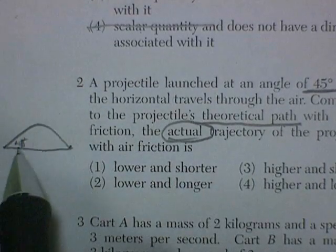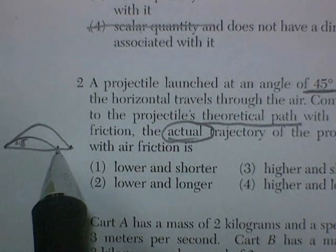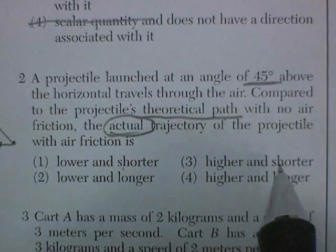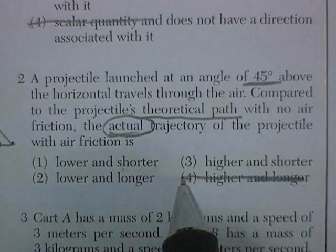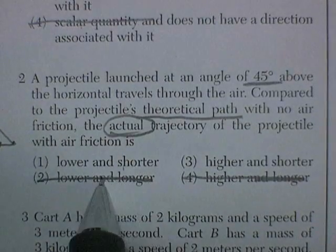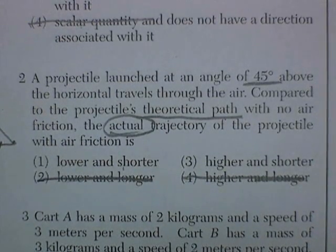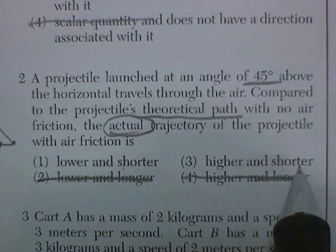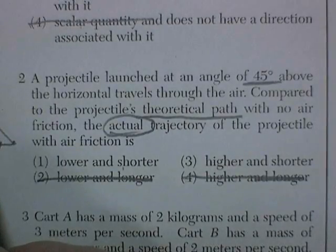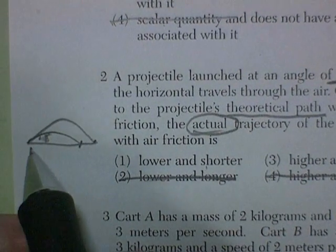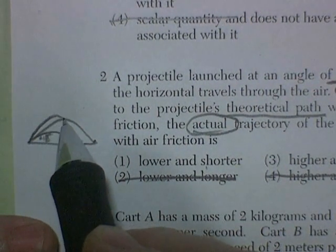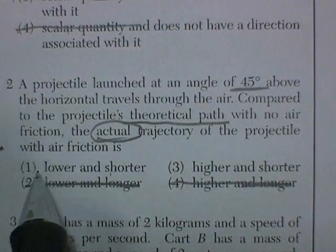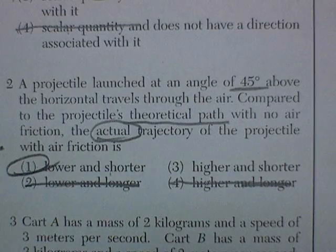45 degrees is the angle you launch at for maximum range with no air friction. So the actual trajectory with friction has got to be shorter. So it'll be higher and shorter, or lower and shorter. Well, higher would imply that it was going somehow higher than its theoretical. So I'm going with lower and shorter projectile.